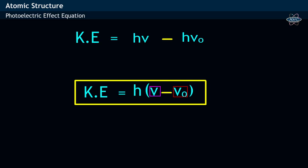Here, nu and nu0 refers to the frequency of incident radiation and threshold frequency of the metal.